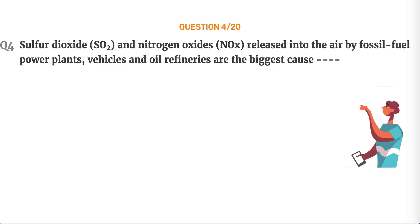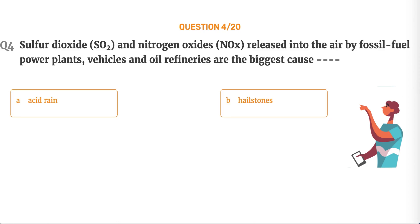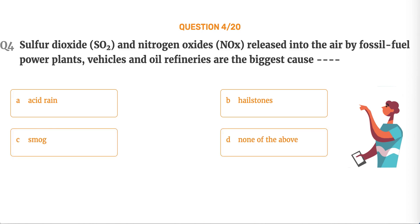Question number 4. Sulfur dioxide, SO2, and nitrogen oxides, NOx, released into the air by fossil fuel power plants, vehicles and oil refineries are the biggest cause of: Option A, Acid rain. Option B, Hailstones. Option C, Smog. Option D, None of the above.